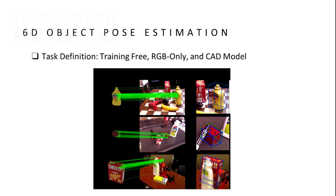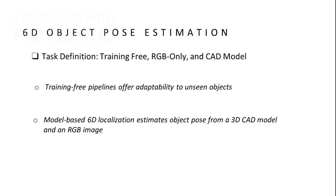This slide defines our task. We aim to estimate the 6D pose of an object — its 3D position and orientation — given only an RGB image and a 3D CAD model. Importantly, our method is training free, meaning it can generalize to unseen objects without any retraining or fine-tuning. This is crucial for real-world applications where new objects are constantly introduced.